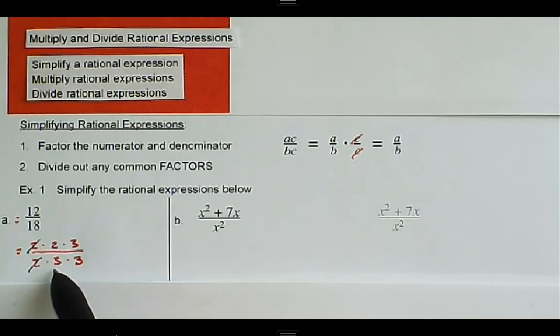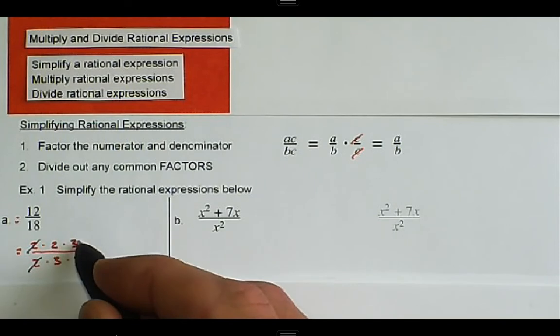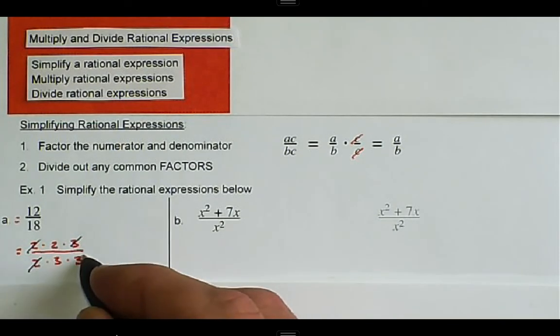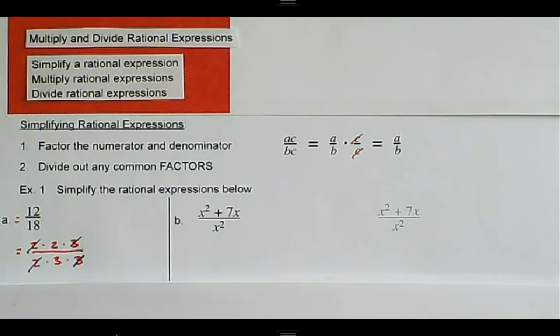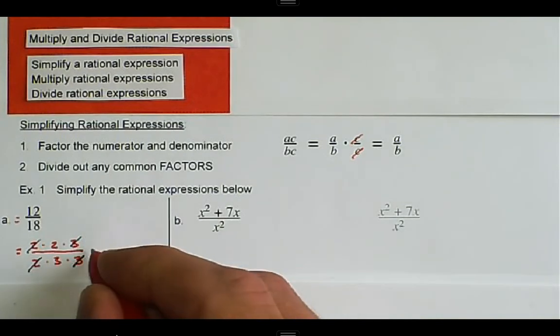We have another 2, but we don't have a 2 anymore in the denominator, so we've got to leave it. We have a 3 in the numerator and a 3 in the denominator, so this one reduces to 2 over 3.